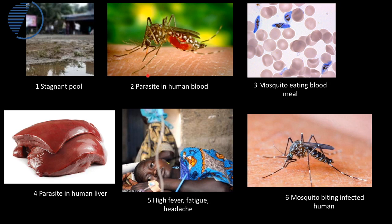Once in the bloodstream, the parasite travels to the human liver, where it undergoes a change, then erupts back into the bloodstream, making the person feel really unwell and bursting their red blood cells. A mosquito not currently carrying the malarial parasite then bites the infected human and becomes a carrier itself.